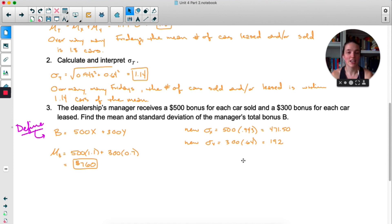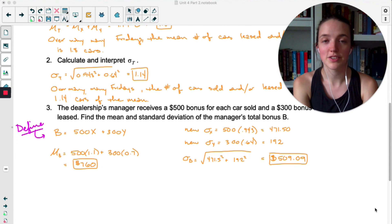Now we can add the variances together and take the square root. Because one does not simply add the standard deviations. Are you sick of that yet? So we're going to square both of those, add them together, and then take the square root. And that is the new standard deviation for our variable B.